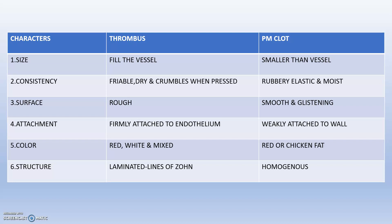Next is attachment. The thrombus will be firmly attached to the endothelium, whereas the postmortem clot will be weakly attached to the wall, so that whenever we apply a small pressure, it will get detached. Next is color: the thrombus will be red, white, or mixed in color, but in case of postmortem clot, they will have a reddish appearance, or we call them chicken fat.